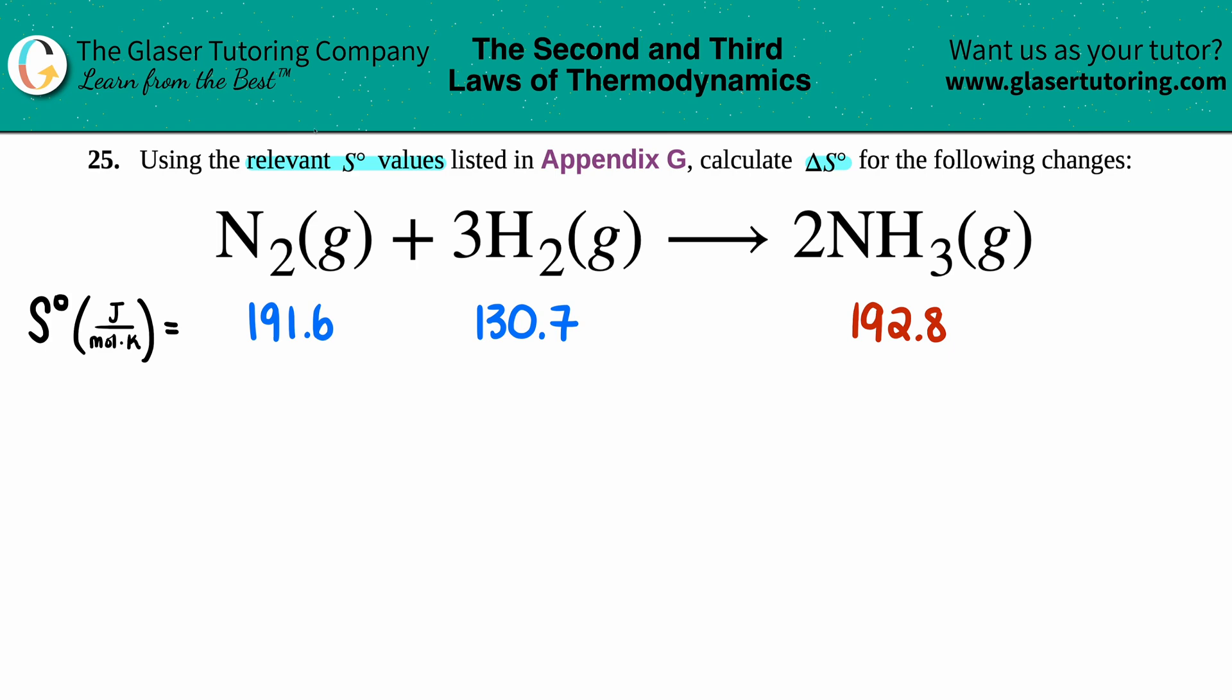The relevant S values they're talking about—remember that S stands for entropy. So we're trying to solve for the delta S, that's the change in entropy, the change in the randomness or the disorder of the molecules from beginning to end, from reactants to products.